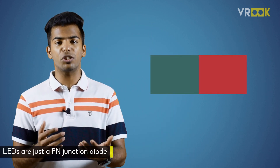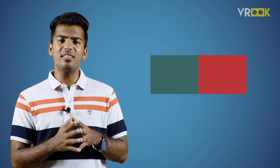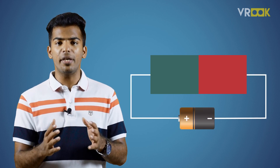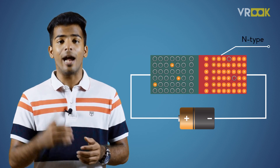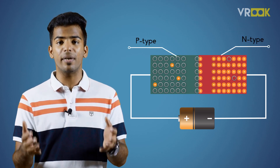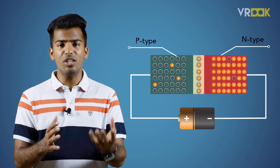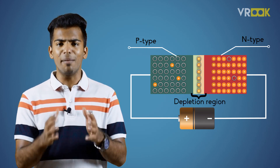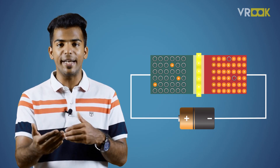LEDs are just a PN junction diode with some special properties added during the doping process. As in the case of a normal PN diode, when we apply some voltage across the LED, the electrons from the N-type semiconductor and holes from the P-type semiconductor will interact. They recombine with each other at a region called the depletion region, and during this recombination process, some energy will come out in the form of photons which radiate light.